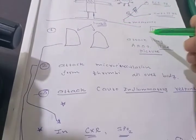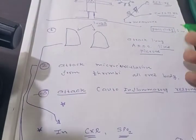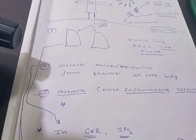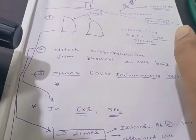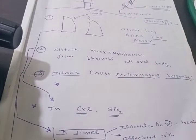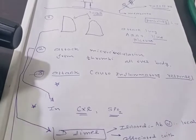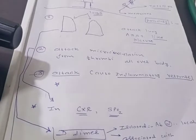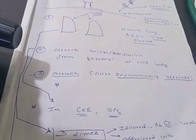It attacks mainly three systems. It goes to the lungs and produces ARDS, acute respiratory distress syndrome-like pictures. It also forms microthrombi within the circulations all over the body. And third, it produces the inflammatory response which is very much exaggerated in the body.